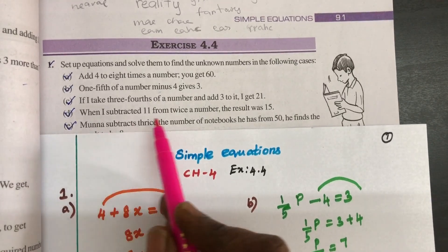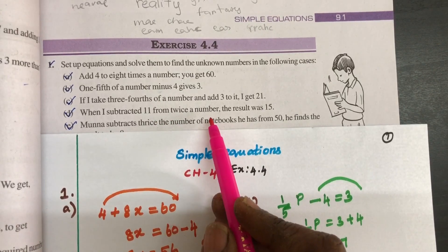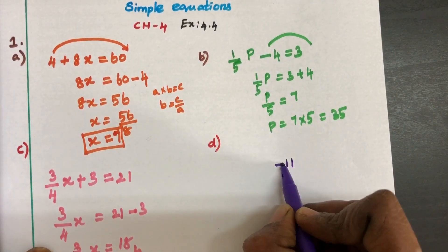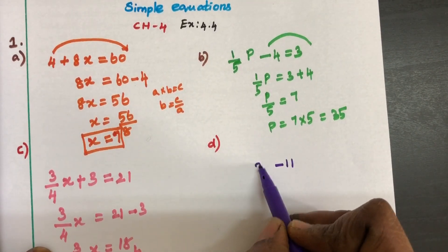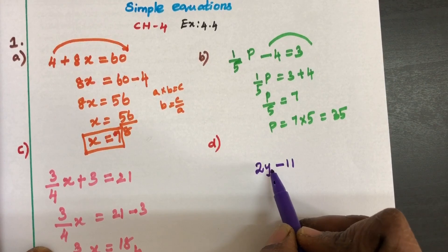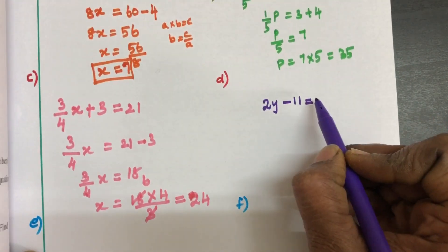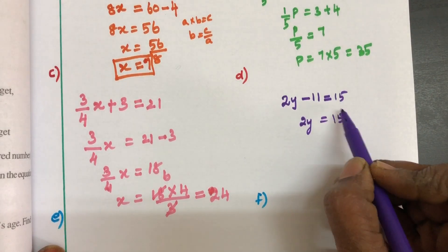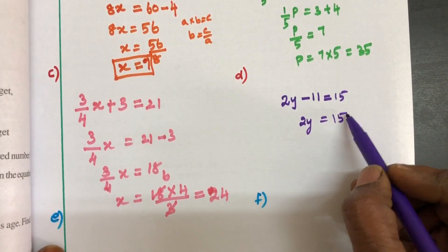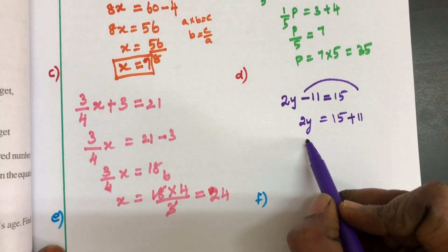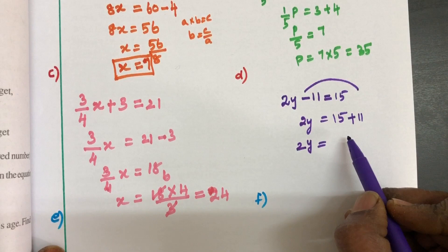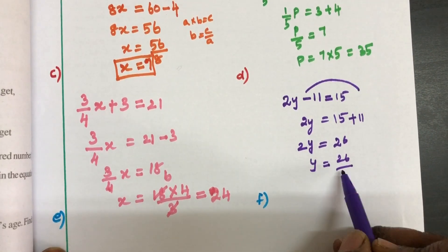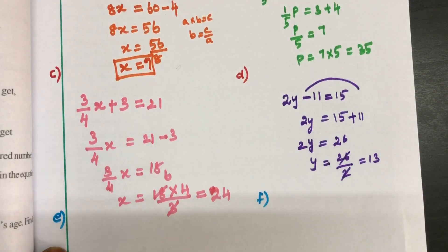D: When I subtract 11 from twice a number, the result was 15. Let the unknown be y. So 2y minus 11 equals 15. Keep the variable term as it is and take the number term to the other side: minus 11 becomes plus 11. So 2y equals 26, and y equals 13 is the answer.